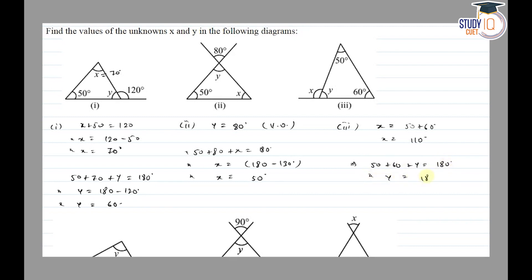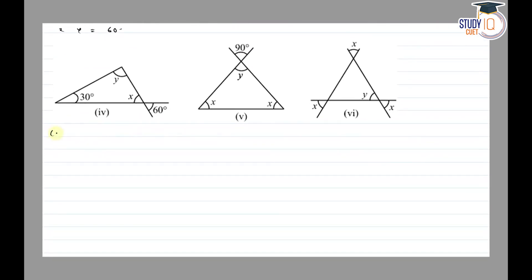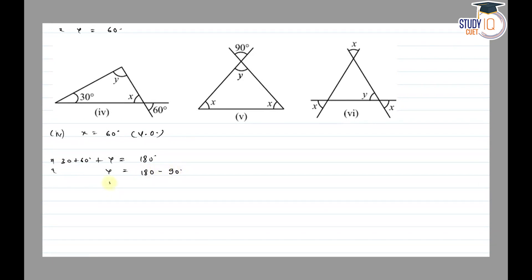So y is equal to 180 minus 110, which equals 70 degrees. For the fourth question, x is equal to 60 degrees because of vertical opposite angles. And using the sum of all interior angles equal to 180 degrees, x plus y is equal to 180 minus 90, so y is equal to 90 degrees.